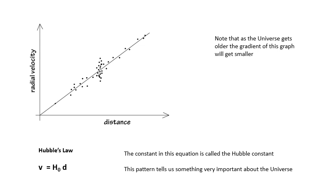The constant, as in V equals HD, usually it's H0. So V is H0D. The constant is called Hubble's constant. One interesting little thing, by the way, is as the galaxies get further away from us, if you came back in a few billion years, the gradient would be significantly different. So Hubble's constant is actually getting smaller all the time. It's not constant. But we assume that it's constant. But this pattern tells us something very important about the universe.